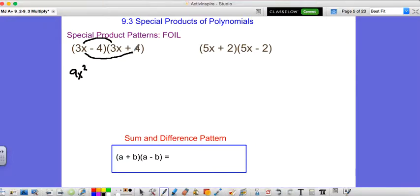Outside, 3x times 4 is 12x. Inside, negative 4 plus 3x is minus 12x. You might be able to see where this is going now. Negative 4 times 4 is minus 16. We're left with just 9x squared minus 16 because 12x minus 12x is just 0.